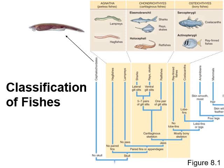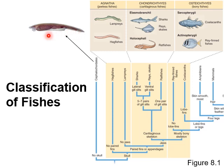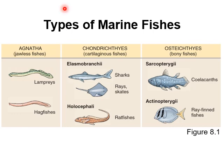We're going to talk about three different groups of fishes. The first are the agnatha, which translates to the jawless fishes — the oldest varieties. Then we'll talk about the chondrichthyes, known as the cartilaginous fishes, which evolved next. And the most recent group to evolve are the osteichthyes, the bony fishes. There is also another group known as the cephalochordates — small, fish-like things that don't actually have a backbone, but have a notochord, which is kind of like a backbone, making them close relatives of the vertebrates.